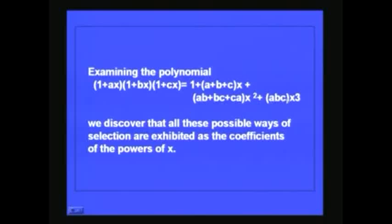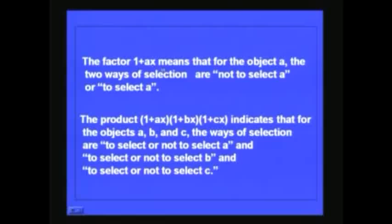The coefficient of x³ represents the possible way of choosing all three objects, that is ABC. So we discover that all these possible ways of selection are exhibited as the coefficients of the powers of x. The factor (1 + Ax) means that for the object A there are two ways of selection: one is not to select A, represented by 1, and the other is to select A, represented by Ax.